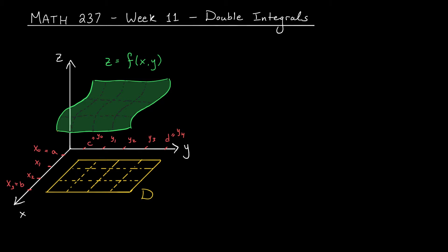Let's go back to the beginning and talk about the motivation behind the double integral. Suppose that we have some surface, the graph of a function, z equals f of xy. To start, we'll assume that this surface lies entirely above the xy plane. Maybe we want to know the volume under this surface and above a particular region D in R2.